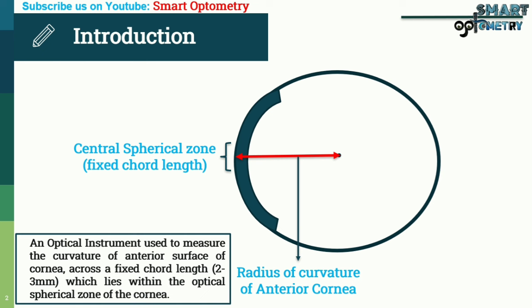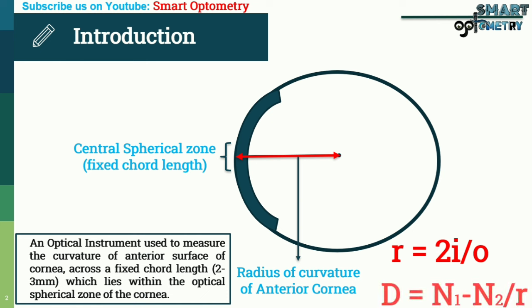We identify the radius of curvature of the anterior cornea by keratometer using the formula R = 2i / O. Then we identify the dioptric power of the anterior cornea using the formula D = (N1 - N2) / R.